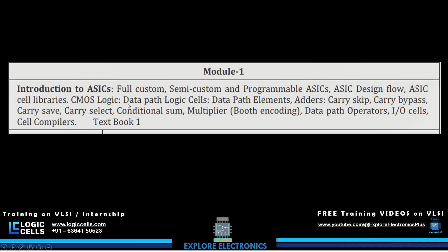In the CMOS logic section, datapath logic cells like adders are discussed. If you want to design an adder as an ASIC, there are different types available. The main task in adders is reducing the time to generate a carry. We will cover carry skip adder, carry bypass adder, carry save adder, carry select adder, and conditional sum adder. The module also covers multipliers with Booth encoding, datapath operators, I/O cells, and cell compilers.